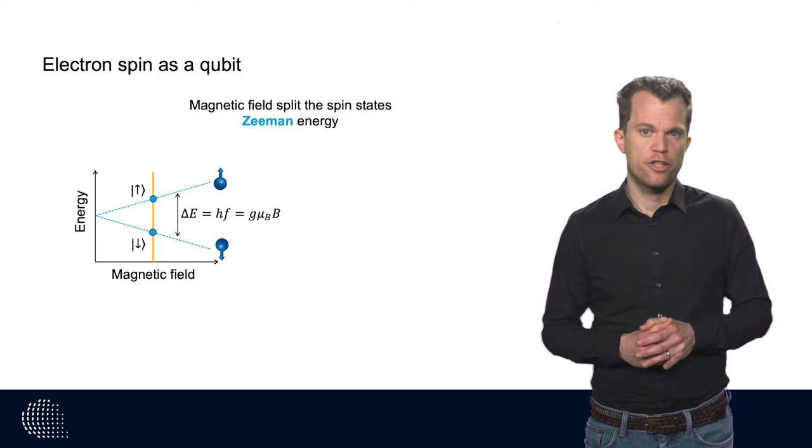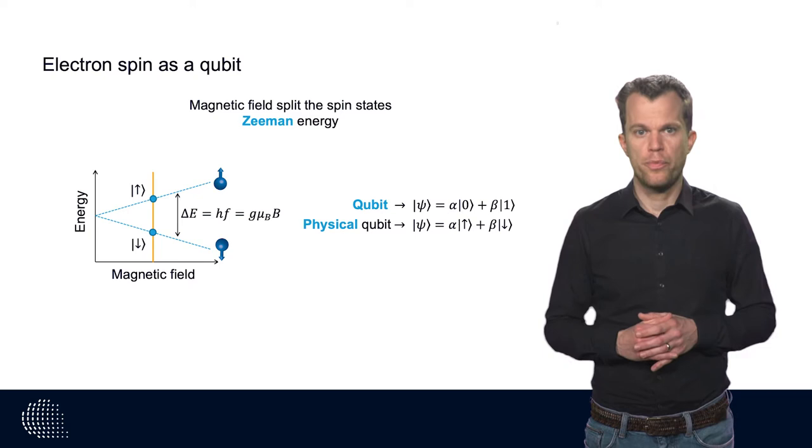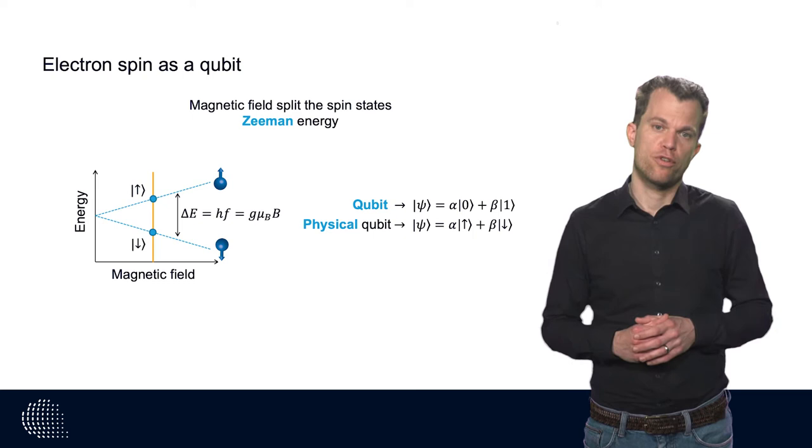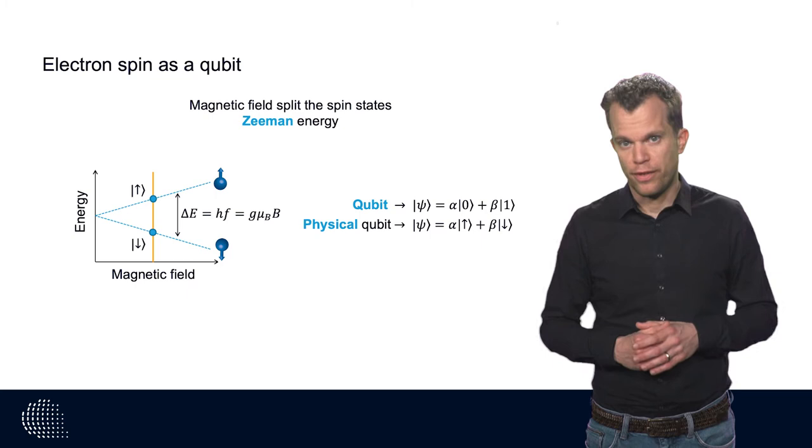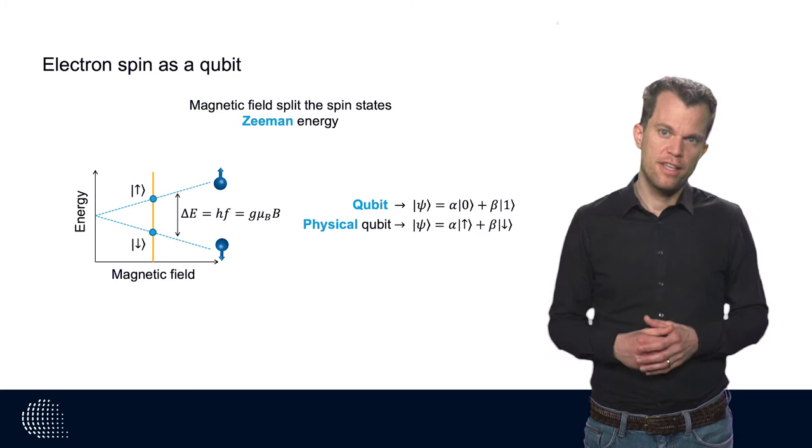We can define qubit states on this physical qubit. When the electron is in one of the basis states, so spin up or spin down, the qubit state is in the corresponding state zero or one. Note that from a physics perspective, we define the lowest energy state as the spin down state, while in information theory, this state is labeled as the state one.